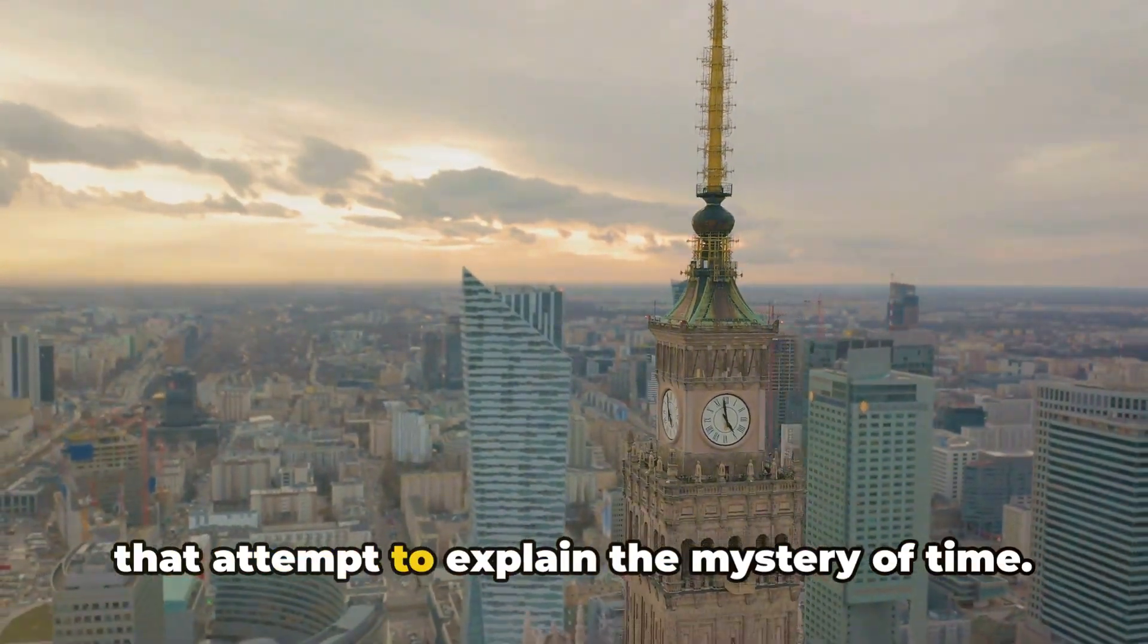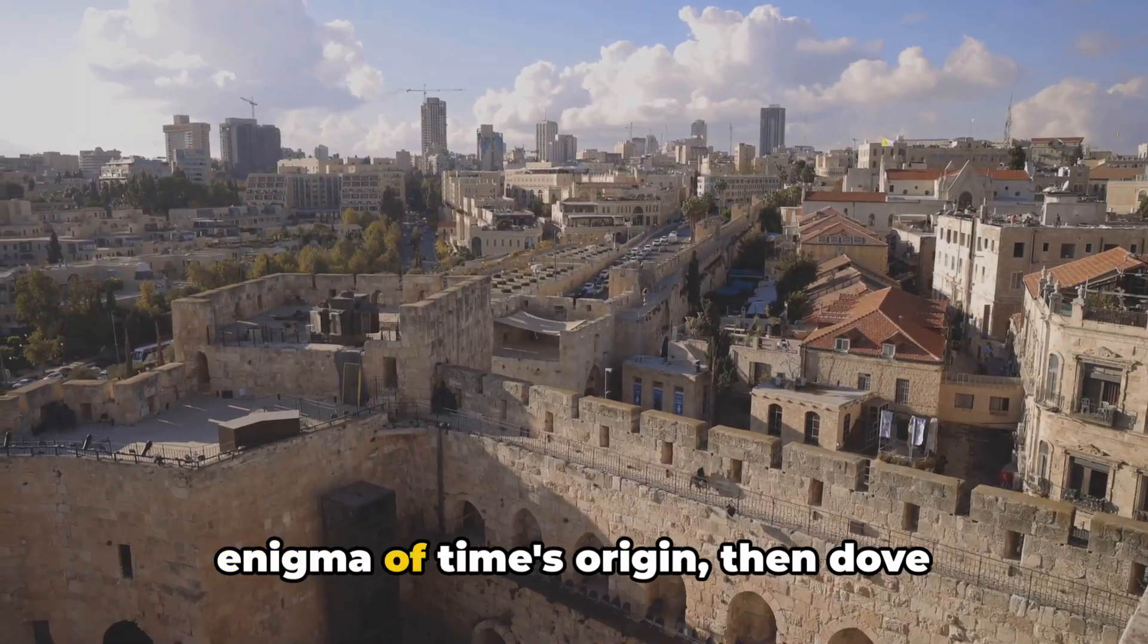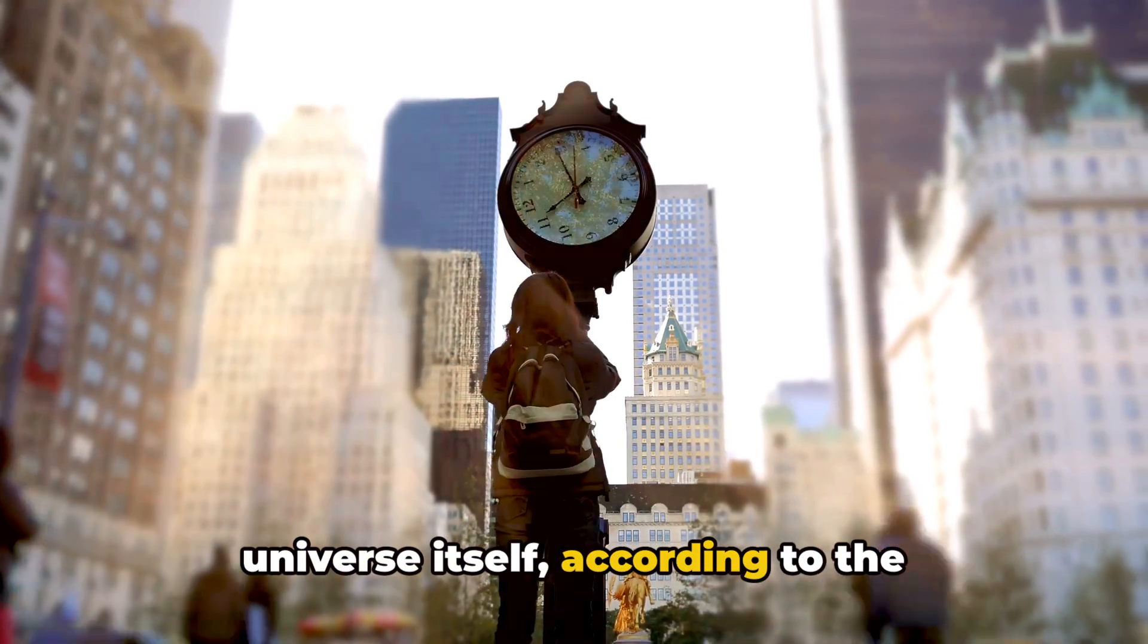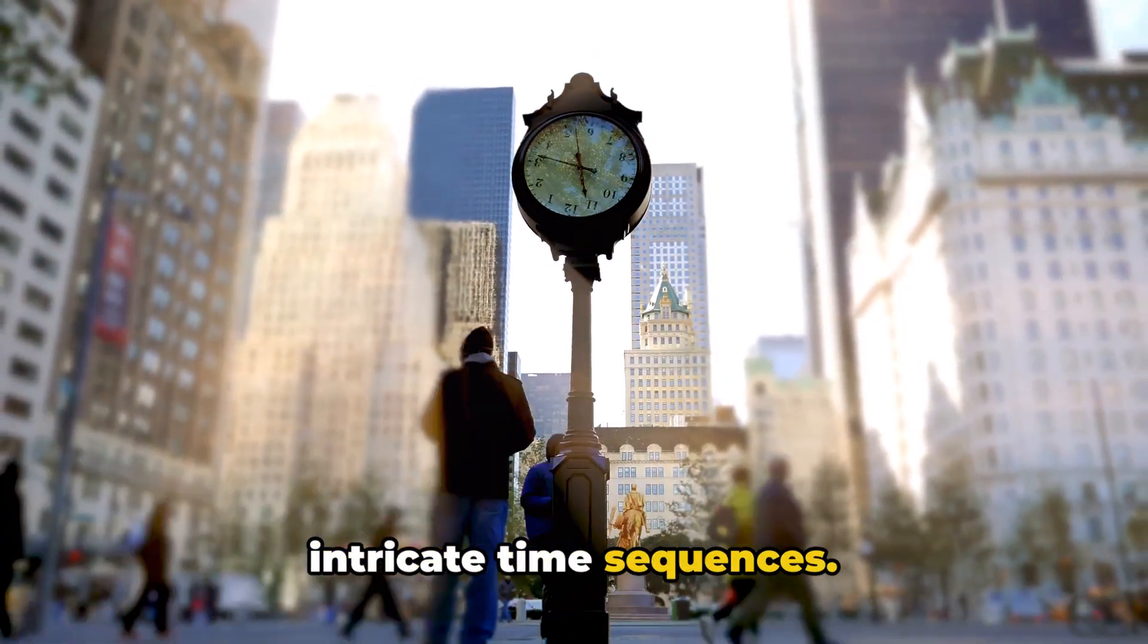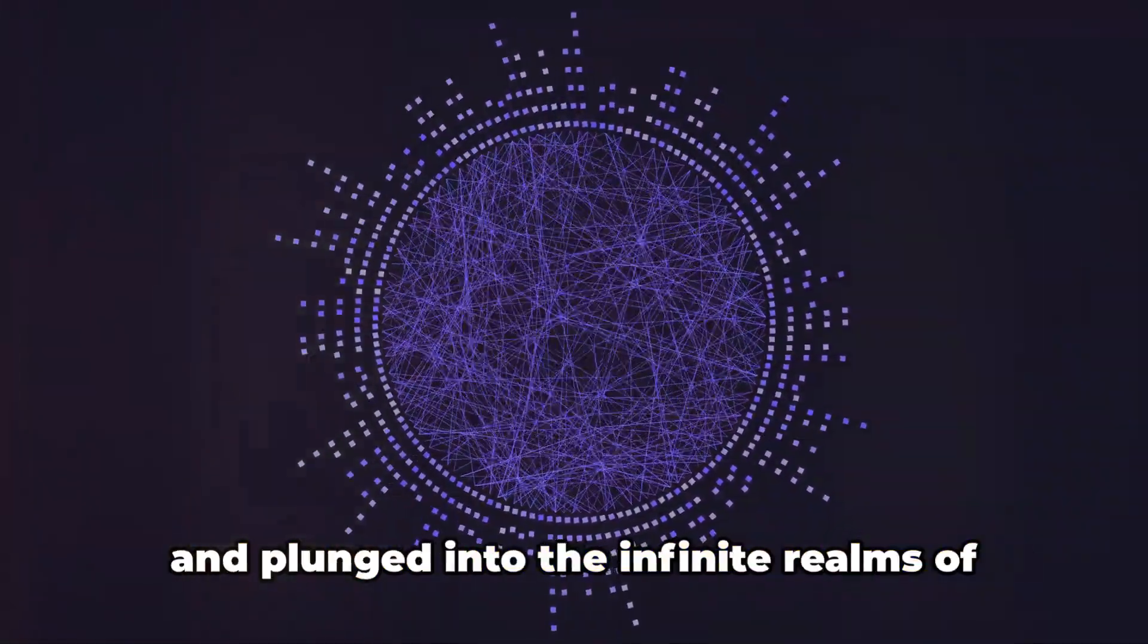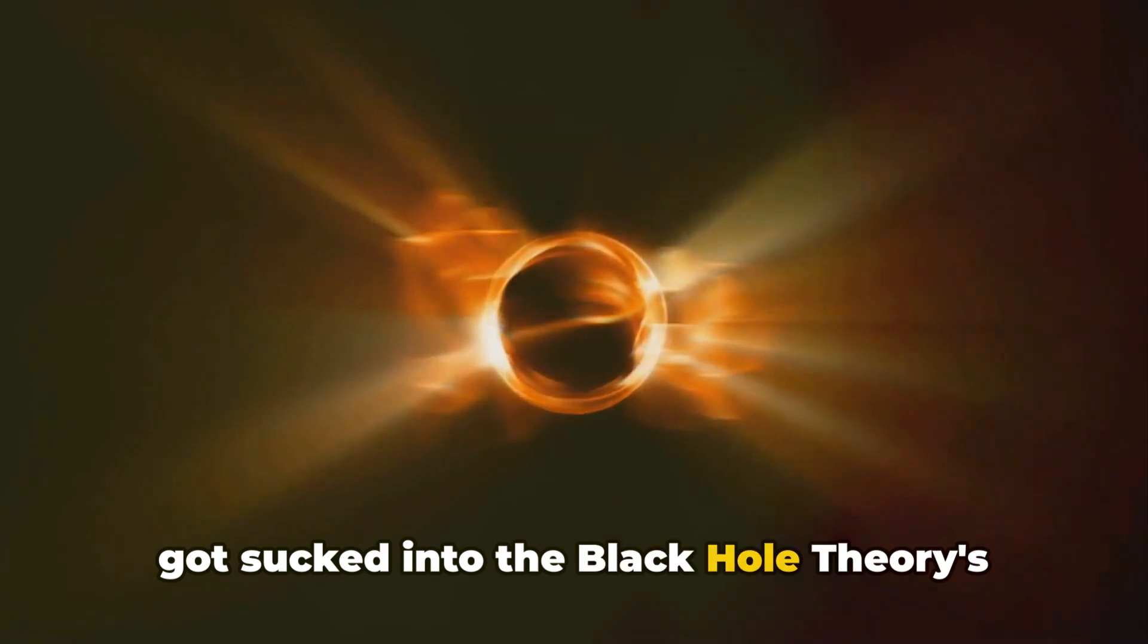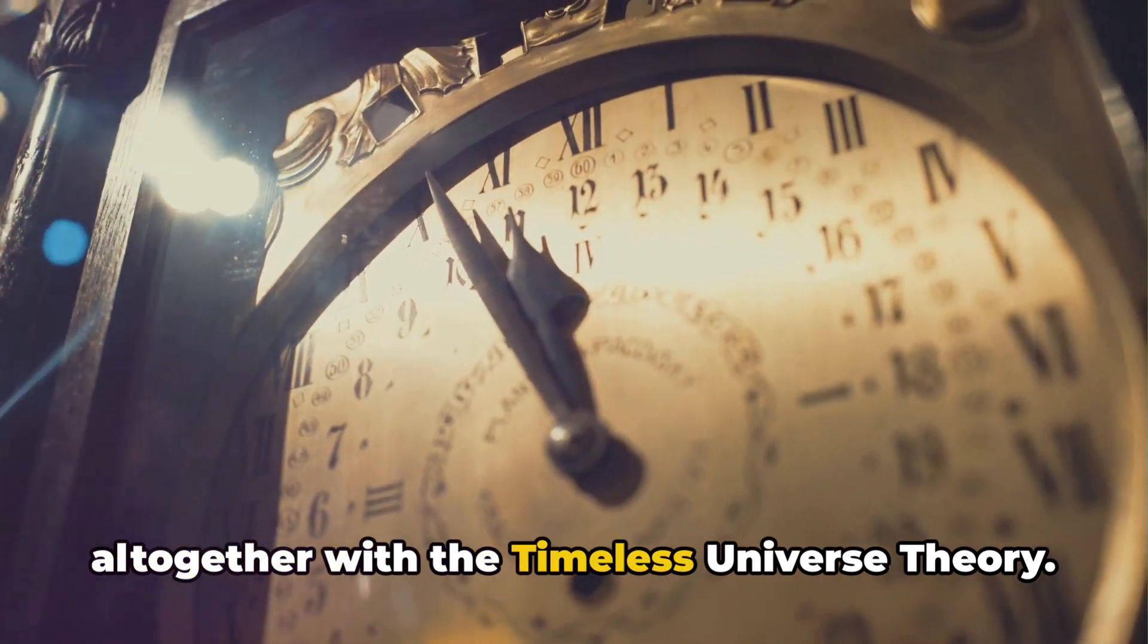So, there you have it. Ten theories that attempt to explain the mystery of time. We journeyed from the ancient philosophers' musings, exploring the enigma of time's origin, then dove headfirst into the explosive beginnings suggested by the Big Bang theory. We oscillated back and forth with the universe itself, according to the oscillating universe theory, and looped through the quantum loop theory's intricate time sequences. We then entwined ourselves within the string theory's multidimensional landscape and plunged into the infinite realms of the multiverse theory. We crossed the boundaries, or lack thereof, with the no-boundary proposal and got sucked into the black hole theory's gravitational pull. Finally, we let go of the concept of time altogether with the timeless universe theory.